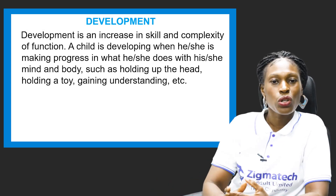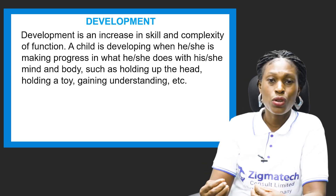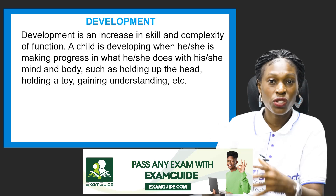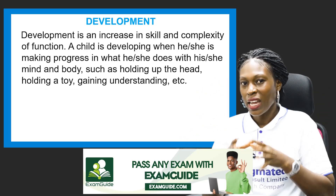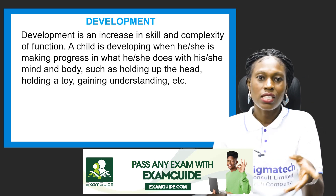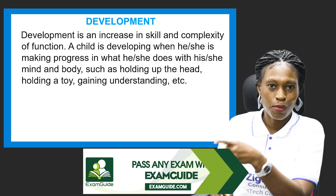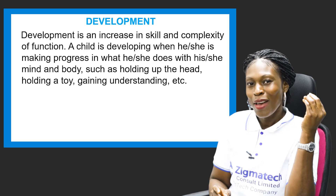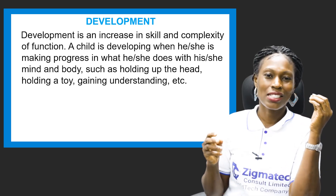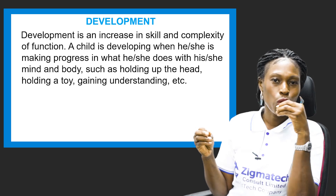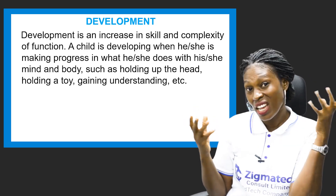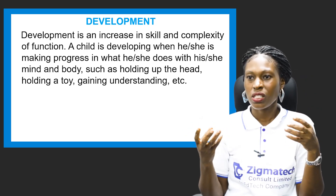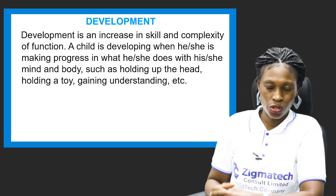Let's look at the meaning of development. Development is an increase in skill and complexity of function. This goes beyond what you can see. With growth, you can see the signs — at three months the baby is doing some things, and almost to a year they're trying to stand up, you can see that. But development has to do with how much progress this person is making in skill and complexity of function — what he or she can do within the mind and body.